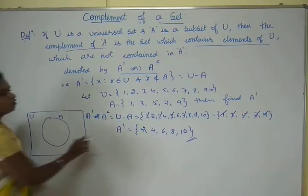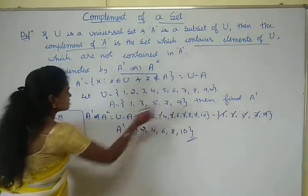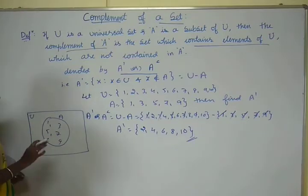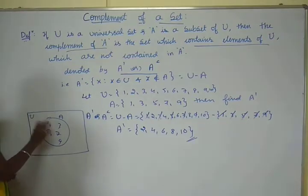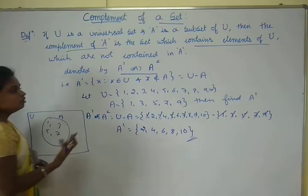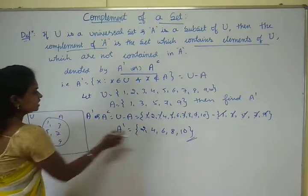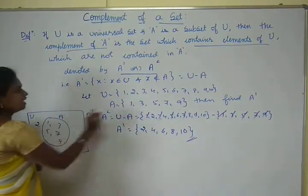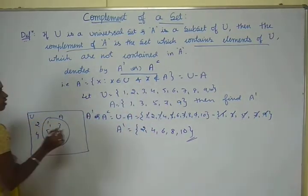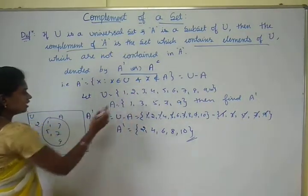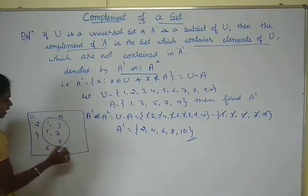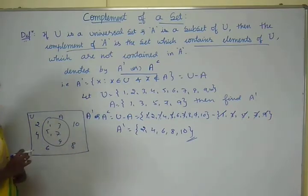First, write the elements of A inside the circle: 1, 3, 5, 7, and 9. The universal set also contains the other elements. So 2 goes outside the circle, then 4, 6, 7 is already inside, 8, and 10 go outside.